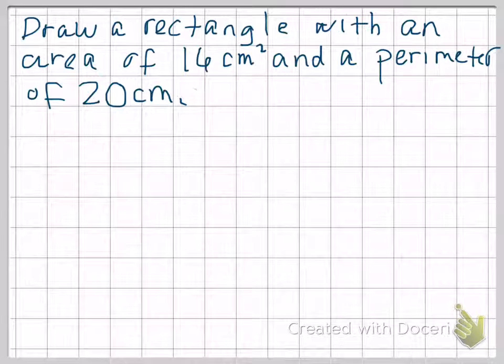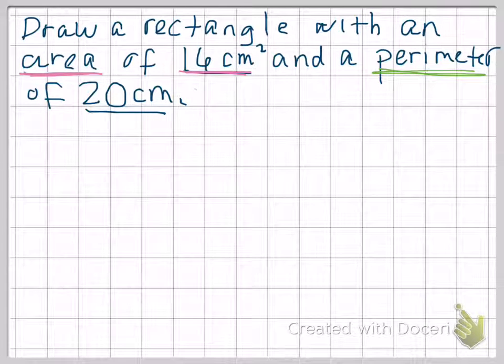Our question here today says draw a rectangle with an area of 16 centimeters squared and a perimeter of 20 centimeters. So first things first, we don't want to get those confused. I'm going to actually color them different. So the area is 16 centimeters squared and the perimeter of our rectangle is going to be 20 centimeters. So the distance around is going to be 20 centimeters. The area of the rectangle is going to be 16 centimeters.